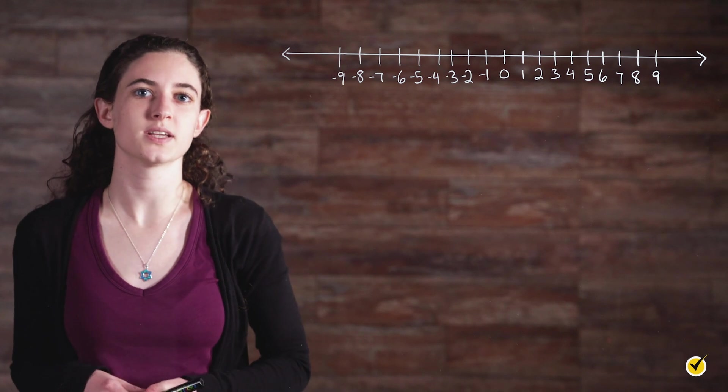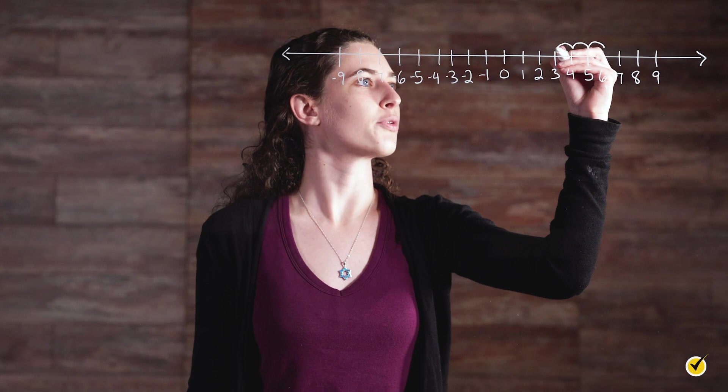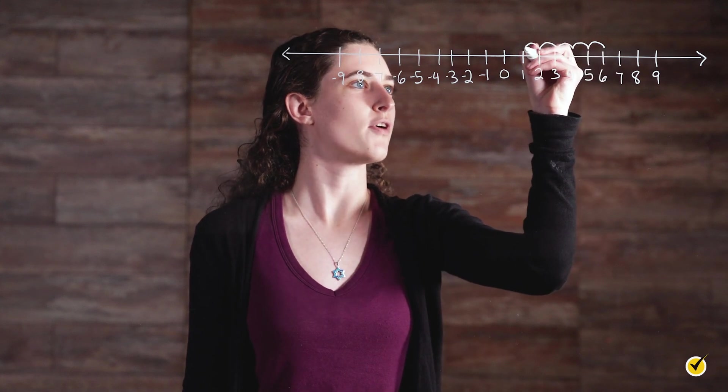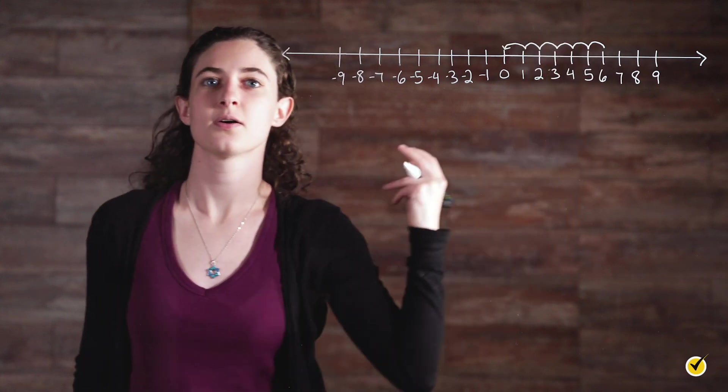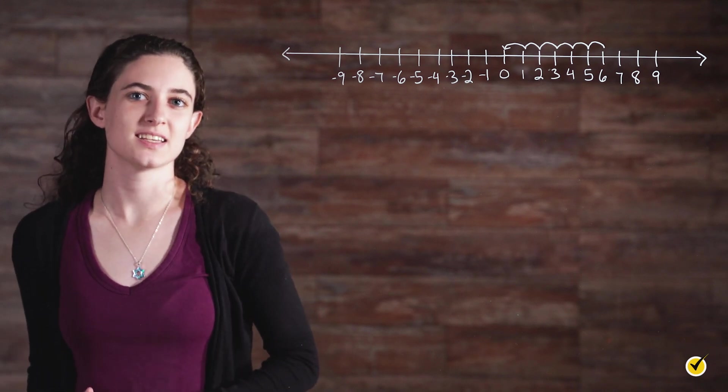Using a number line we can see that six is one, two, three, four, five, six places away from zero. Therefore, the absolute value of six is six.